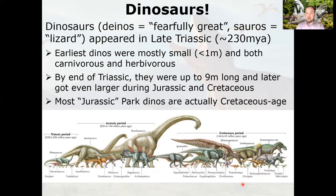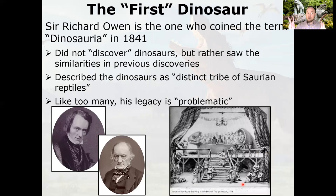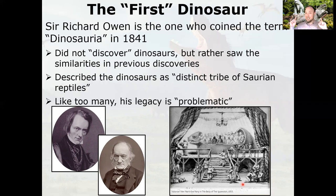Sir Richard Owen is credited with coining the term 'dinosaurs.' This was the first time the word was applied to these creatures. You'll notice the early reconstructions look very different from our modern conception of what a dinosaur looks like — and that's going to be one of the themes of this class: how our understanding of what these creatures looked like has changed through time, and more importantly why, based on what evidence. This is a science class, so it's not based on opinion.